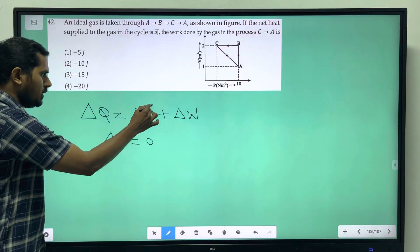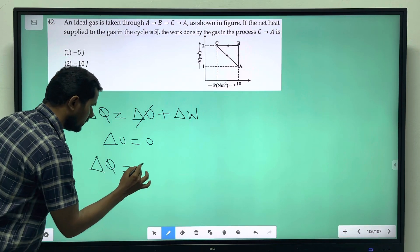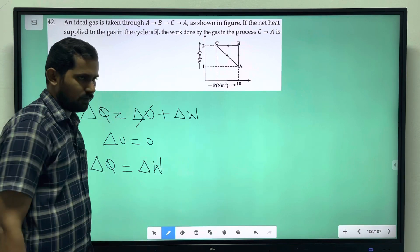Now, ΔU is equal to 0. So, ΔQ is equal to ΔW, the work done.